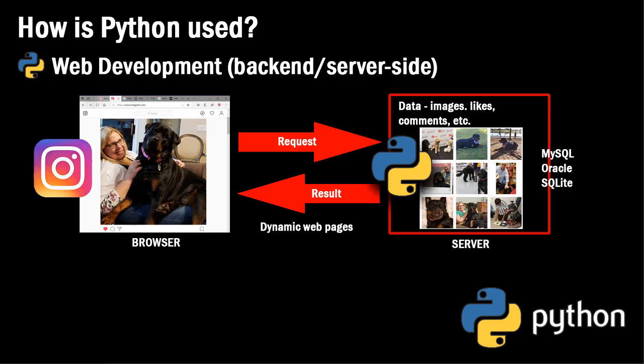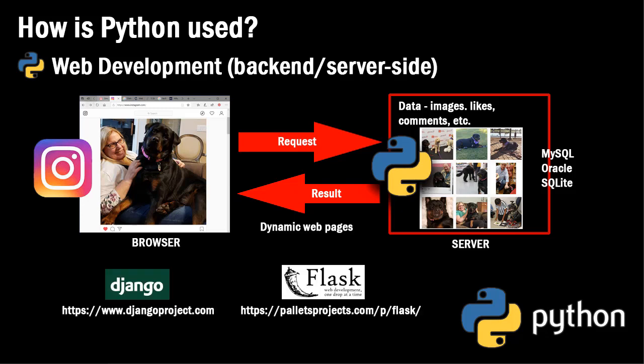Instagram, for example, uses Python to show the list of images that belong to a particular user, as well as all of the likes, the comments, data information, and it handles that as you browse through various accounts. Each time you go to a different account, it's going to send a request to send that information as a result. Now Python doesn't do that necessarily in and of itself, but rather Python is very extensible, and so it uses some frameworks.